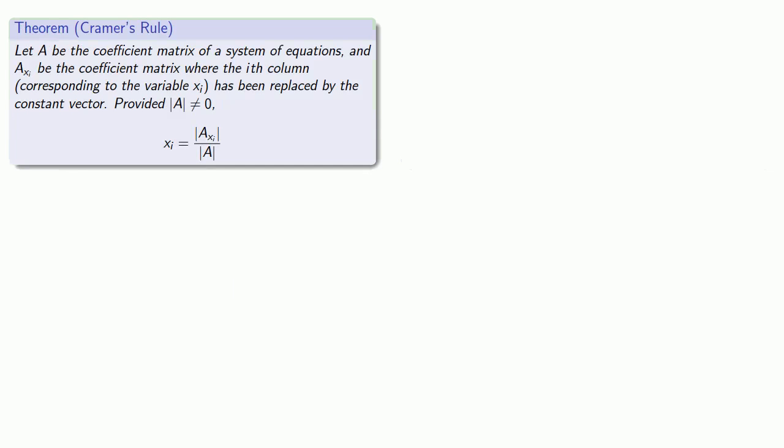Now, on the surface, Cramer's rule seems to be a great thing. Here's a way that we can solve a system of equations very easily. The problem is that when we actually try to implement it, we find it's actually very difficult to implement because we have to find all of these determinants. So in practice, nobody uses Cramer's rule to solve anything more complicated than a 2 by 2 equation.